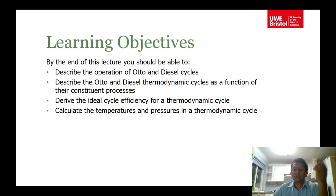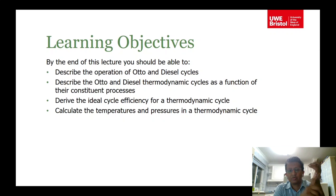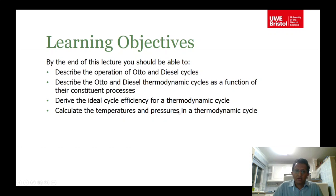To summarize: we have covered the Otto cycle, diesel cycle, and dual cycle, deriving ideal efficiencies and calculating temperatures and pressures at each state. The key relations to remember are: for an isentropic process, PV^gamma = constant and P1V1/T1 = P2V2/T2; for an isochoric process V is constant; for an isobaric process P is constant. See you Wednesday for the tutorial and Thursday for the lecture.